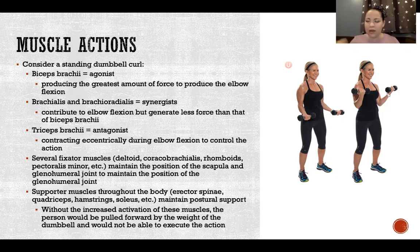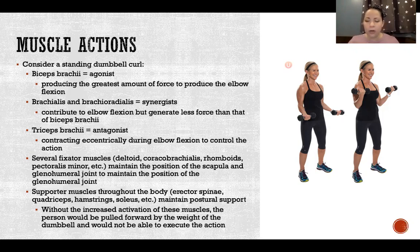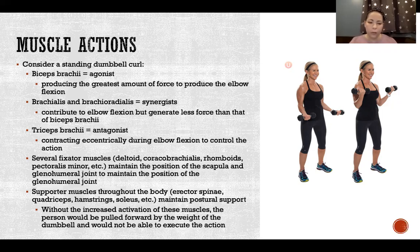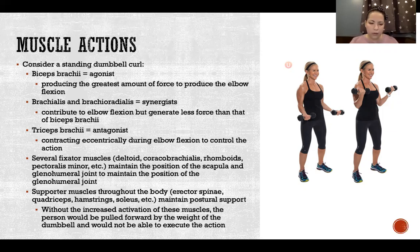If biceps brachii shortens, it would cause flexion at both the glenohumeral joint and the elbow. But if we only want flexion at the elbow and to maintain a steady shoulder position, we need to activate fixator muscles that hold the glenohumeral joint in extension and prevent it from flexing as the biceps brachii contracts and shortens. We also have supporter muscles throughout the body — erector spinae, quadriceps, hamstrings, soleus — maintaining postural support so we can accurately complete the upper extremity movement. Without increased activation of these muscles, the person would be pulled forward by the dumbbell's weight.